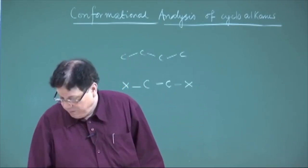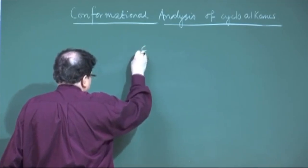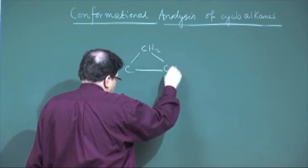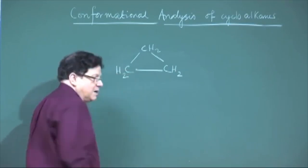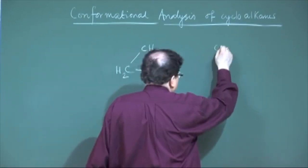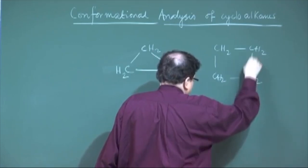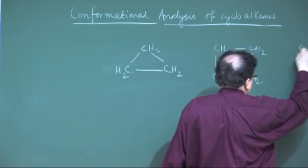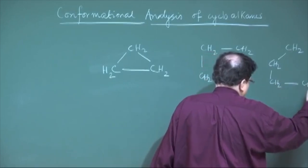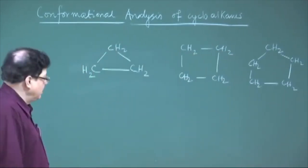The cyclic system starts with a three-carbon system called cyclopropane, which is the first member of the cycloalkane series. The second member is cyclobutane, the third member is cyclopentane, and so on. You can increase the size of the ring by adding more carbon atoms.